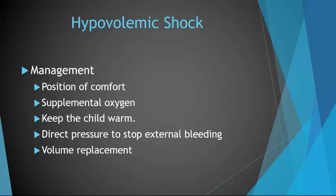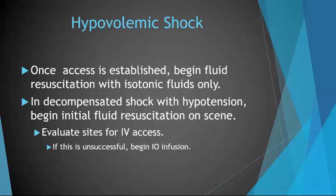Volume replacement is a mainstay of treatment for hypovolemic shock, whether medical or traumatic in origin. Once access has been established, begin fluid resuscitation with isotonic fluids. Begin with a 20 milliliter per kilogram bolus, then reassess status. Try to warm the IV fluids if possible to counteract the effects of systemic hypothermia from environmental exposure, blood loss, or open wounds. Multiple fluid boluses may be necessary. If you cannot get IV access, IO is certainly acceptable.